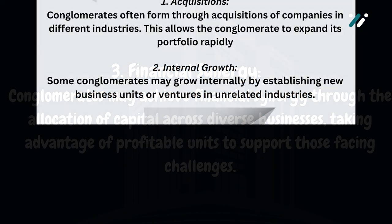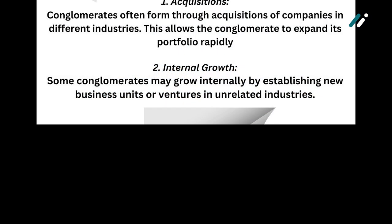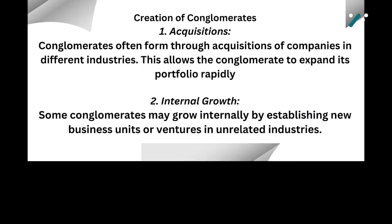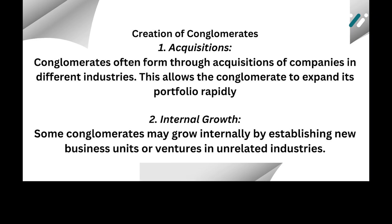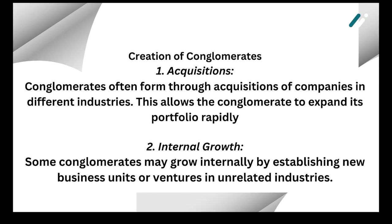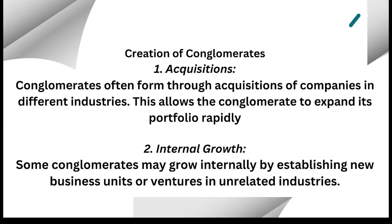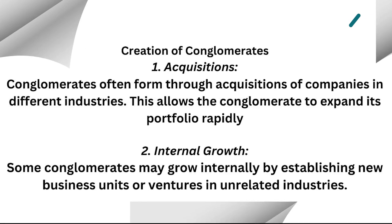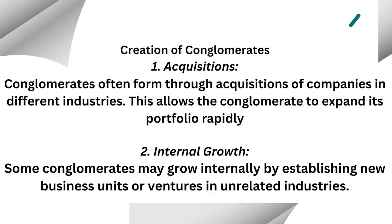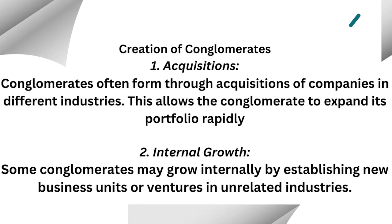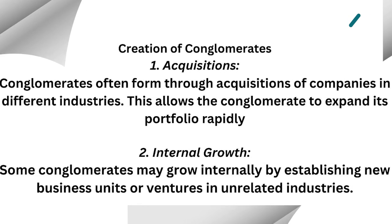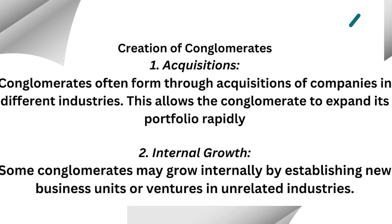How then are conglomerates created? Creation of conglomerates. Acquisitions: conglomerates often form through acquisitions of companies in different industries, which allows the conglomerate to expand its portfolio rapidly. Internal growth: some conglomerates may grow internally by establishing new business units or ventures in unrelated industries.